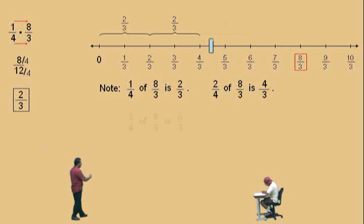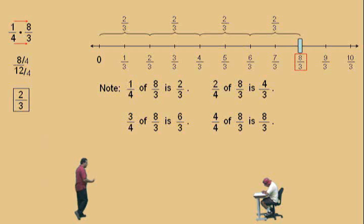And if we want 3 fourths of 8 thirds, that should be how much? Six thirds. Professor Perez: That's right. And 4 fourths of 8 thirds should be 8 thirds, right? Professor Perez: It should be itself because 4 fourths is basically 1.